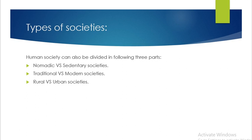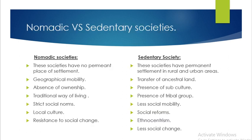Human society can also be divided into three further parts: nomadic versus sedentary, traditional versus modern, and rural versus urban societies. Nomadic societies have no permanent place of settlement, high geographical mobility, and absence of ownership.